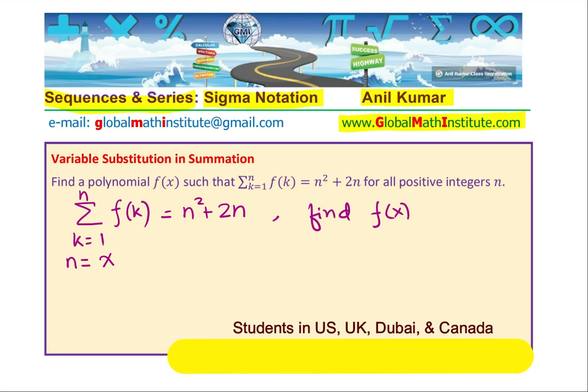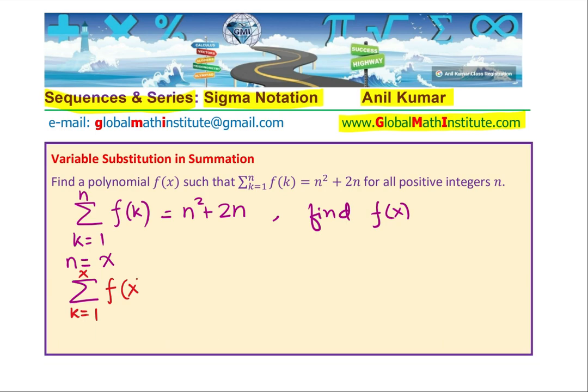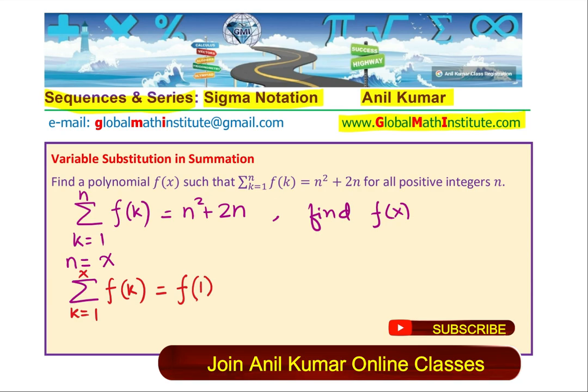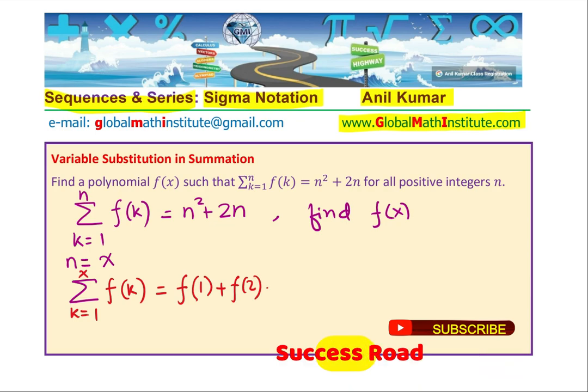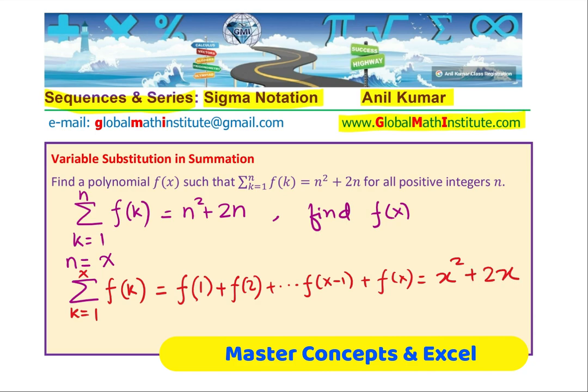In that case, we get sum where k goes from 1 to x of f(k). That sum of f(k) will be f(1) + f(2) + ... + f(x-1) + f(x) equals to x² + 2x, correct? So we get a polynomial here where the sum of all these functions is x² + 2x.